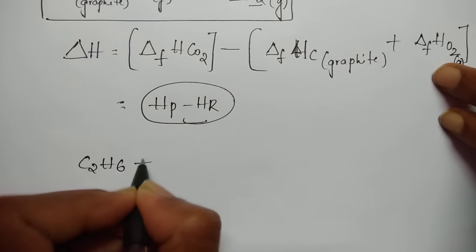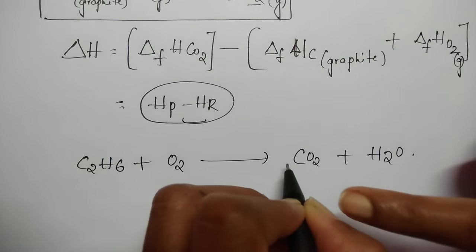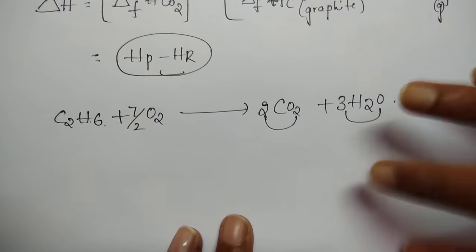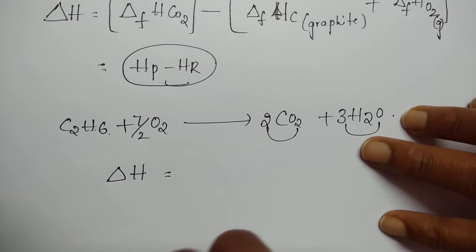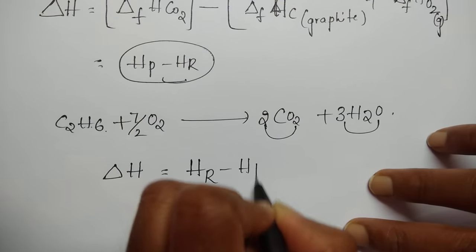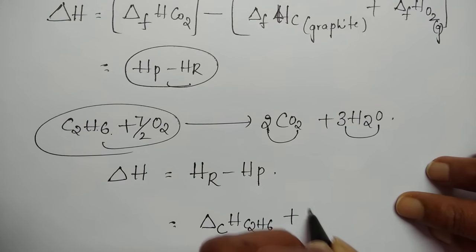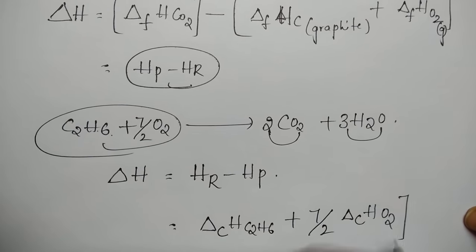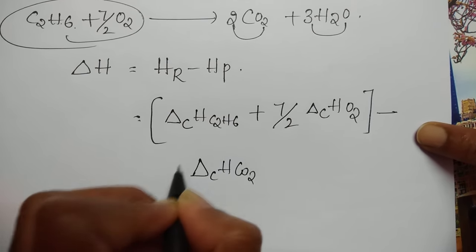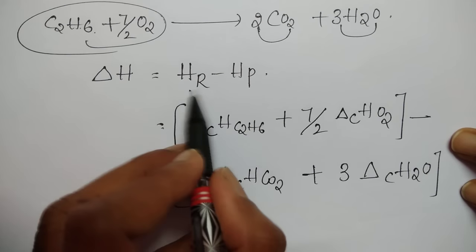For enthalpy of combustion, the formula is reactants minus products. For example, combustion of ethane: C2H6 + 7/2 O2 → 2CO2 + 3H2O. The formula gives: ΔH(combustion) = [ΔHcomb(C2H6) + (7/2)ΔHcomb(O2)] - [2·ΔHcomb(CO2) + 3·ΔHcomb(H2O)]. That is reactants minus products.